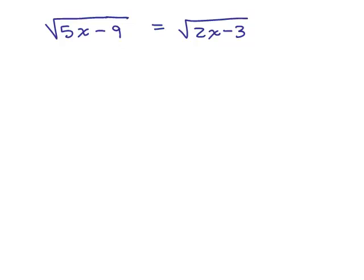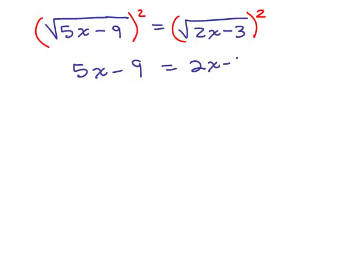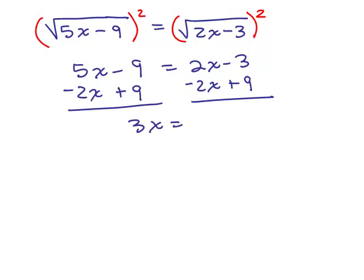Here's another problem. There are two square roots in this problem, and actually both are isolated. Since one is isolated, we can square both sides. Think of it this way: if the square root of something equals the square root of something else, whatever is under each square root must be the same. Squaring both sides gives us that the expressions under each radical are equal. We subtract 2x from both sides and add 9 to both sides to get 3x equals 6, so x equals 2.